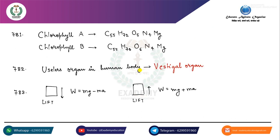Chlorophyll A chemical formula is C55, H72, O5, N4, Mg. Chlorophyll B formula: C55, H70, O6, N4, Mg.